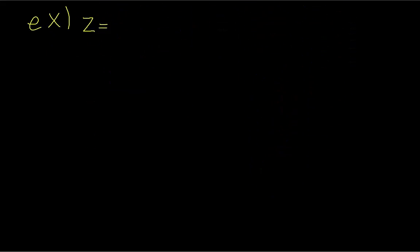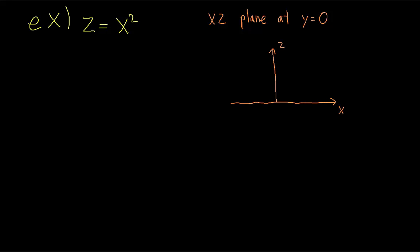As an easy example, let's take the equation z equals x squared. Notice how y isn't even in the equation. Let's try to find some cross-sections holding the value of y constant. If we take the cross-section at y equals zero, the xz-plane at y equals zero is just a parabola in z and x. Since y isn't in the equation, if we took the cross-section at any constant y value, it would look exactly the same.